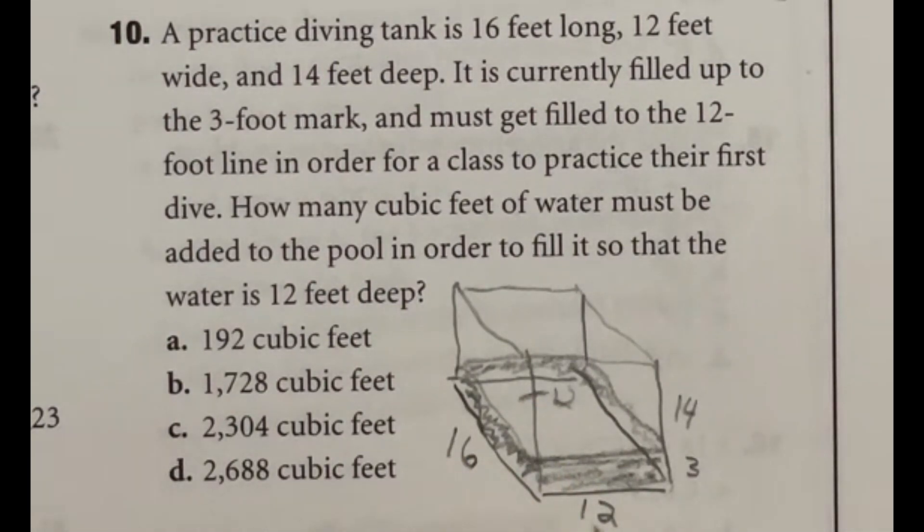So let's take a look here. That means it would be 16 by 12. So that would be 16 times 12 times the height. Well, we already have three, but we need to make it up to 12. So that means we have nine more to go. So we're going to multiply this by nine. So really, you just need to do 16 times 12 times nine, which ends up being 1728, which is answer B.